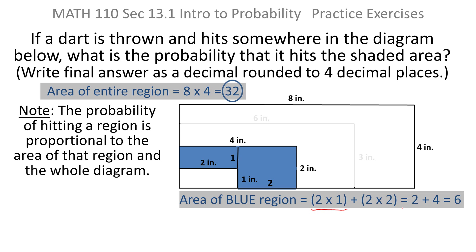Of course, two times one is two, and two times two is four, and two plus four is six. So that tells me that the area of the blue region is six.